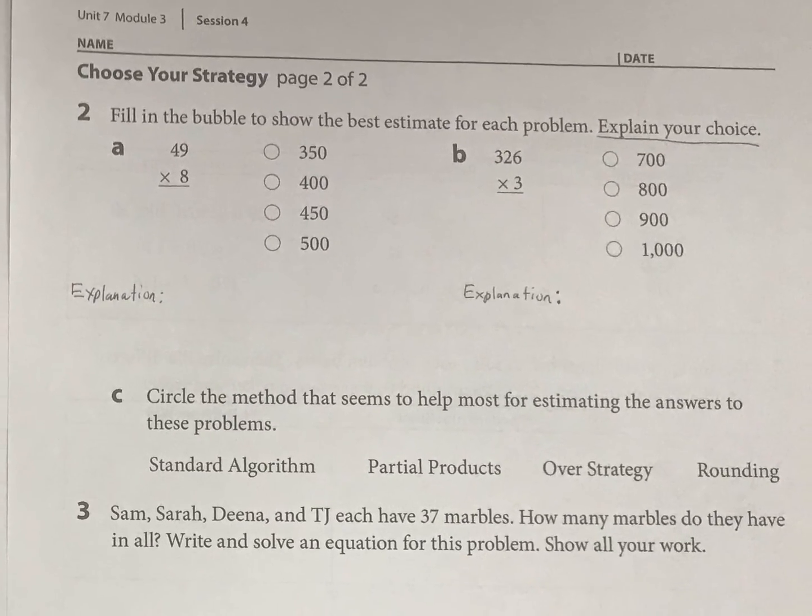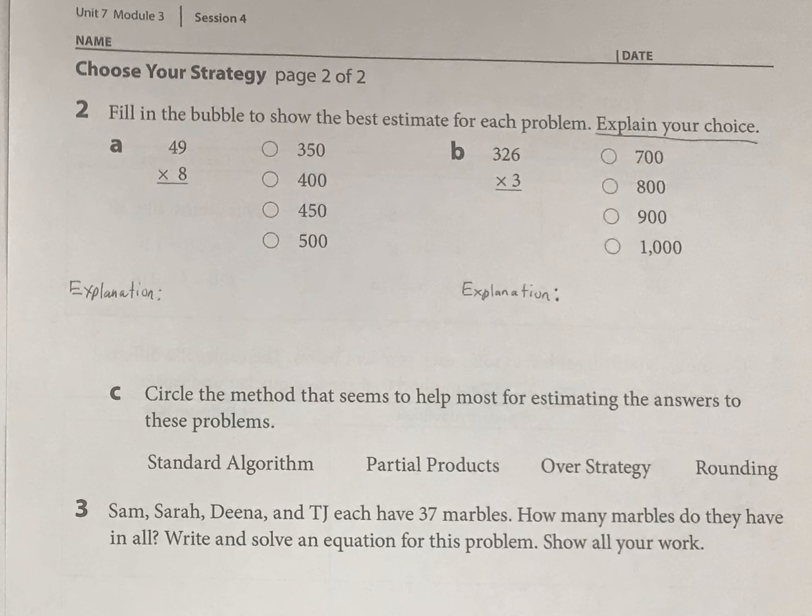And now we're just doing some estimation. We don't even need to solve these. Just estimate. So what are you thinking here? I'm thinking 50 times 8 is 400. It's going to be just less than 400, right? So that's how I figured it out for the estimate.